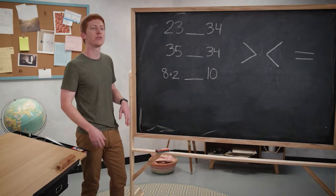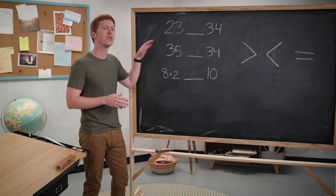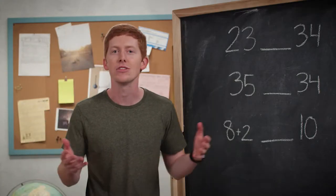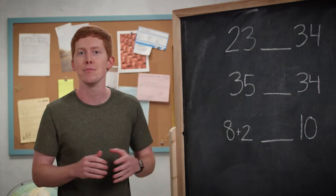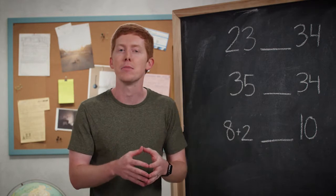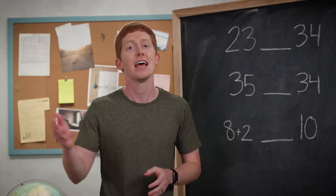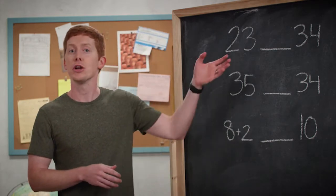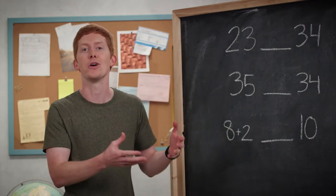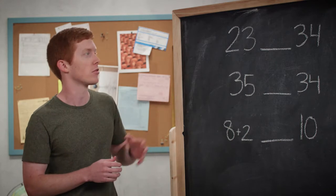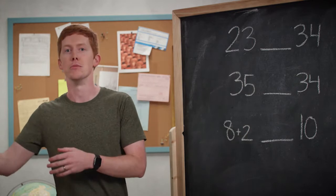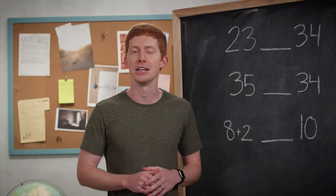Our first one is 23 and 34. Do you notice that there's a blank space in between? We want to fill it in with some symbol that makes a true statement. So 23 is made up of two tens — two groups of tens — and three ones. Well, 34 has three groups of tens and four ones. We know that 34 is larger than 23. You'll hear words like larger, smaller, fewer, and more when we're talking about comparing numbers.